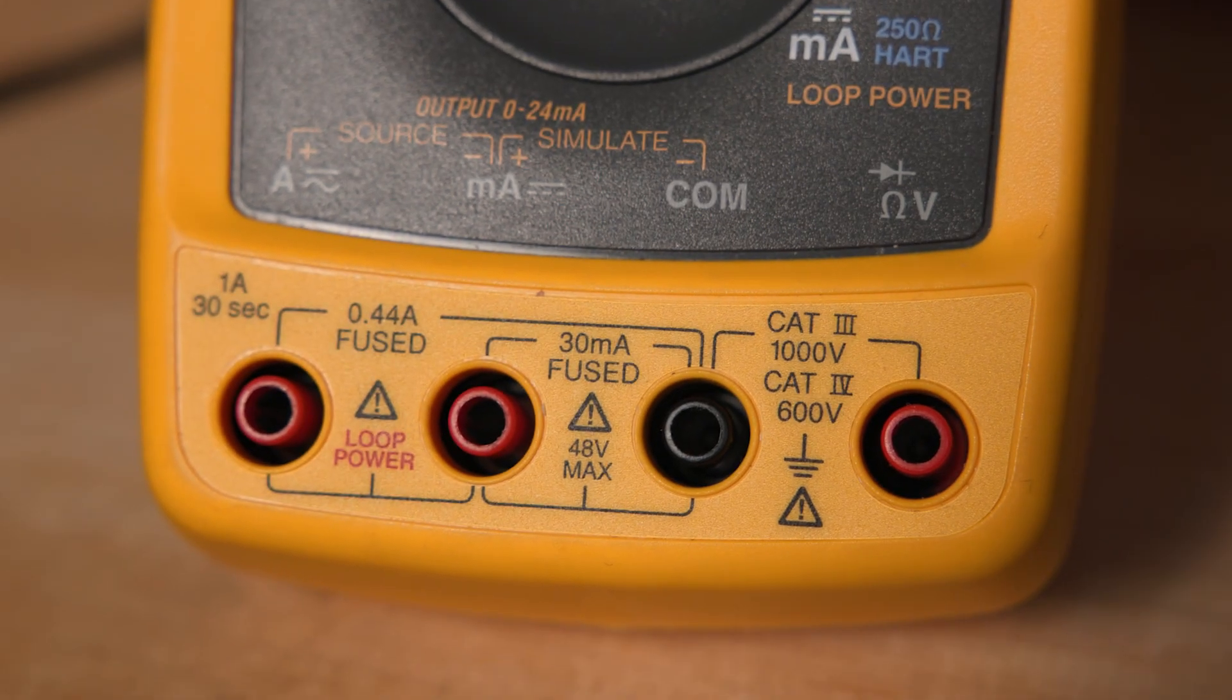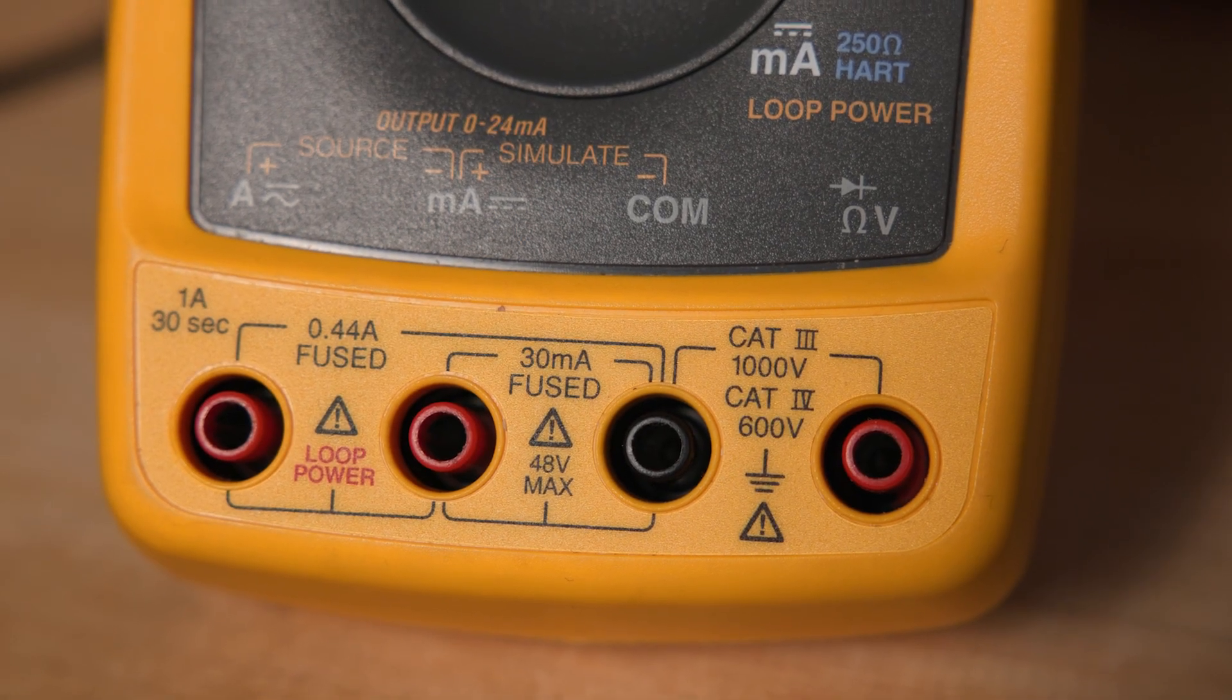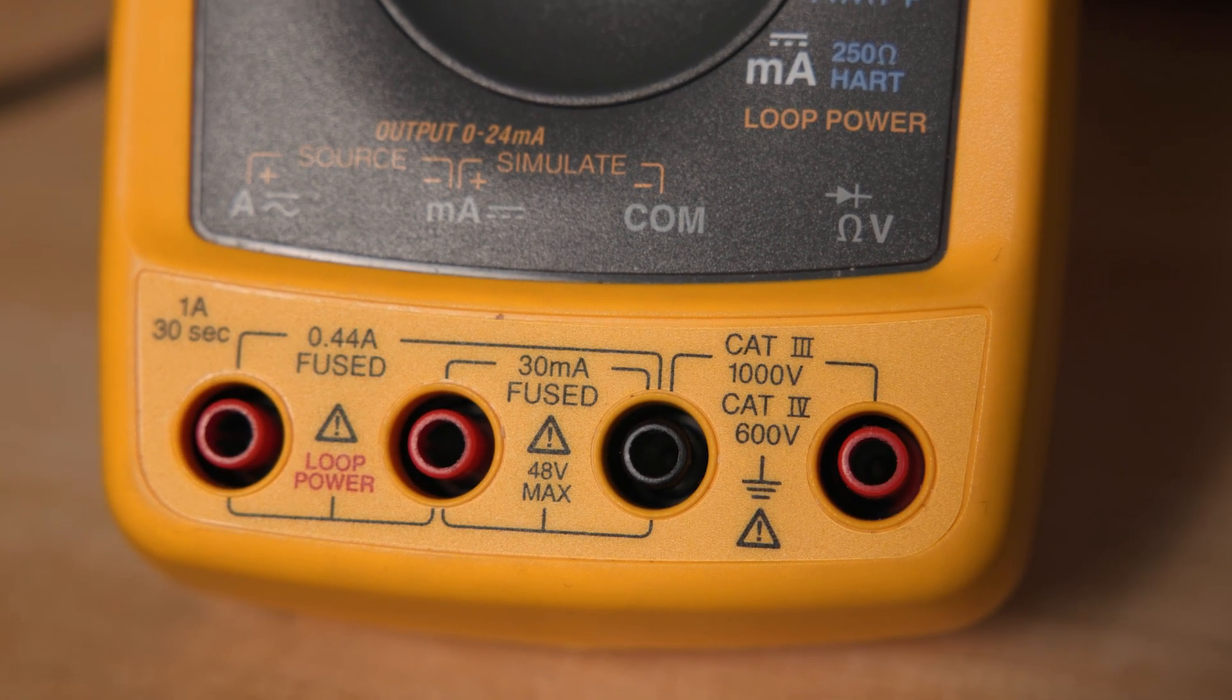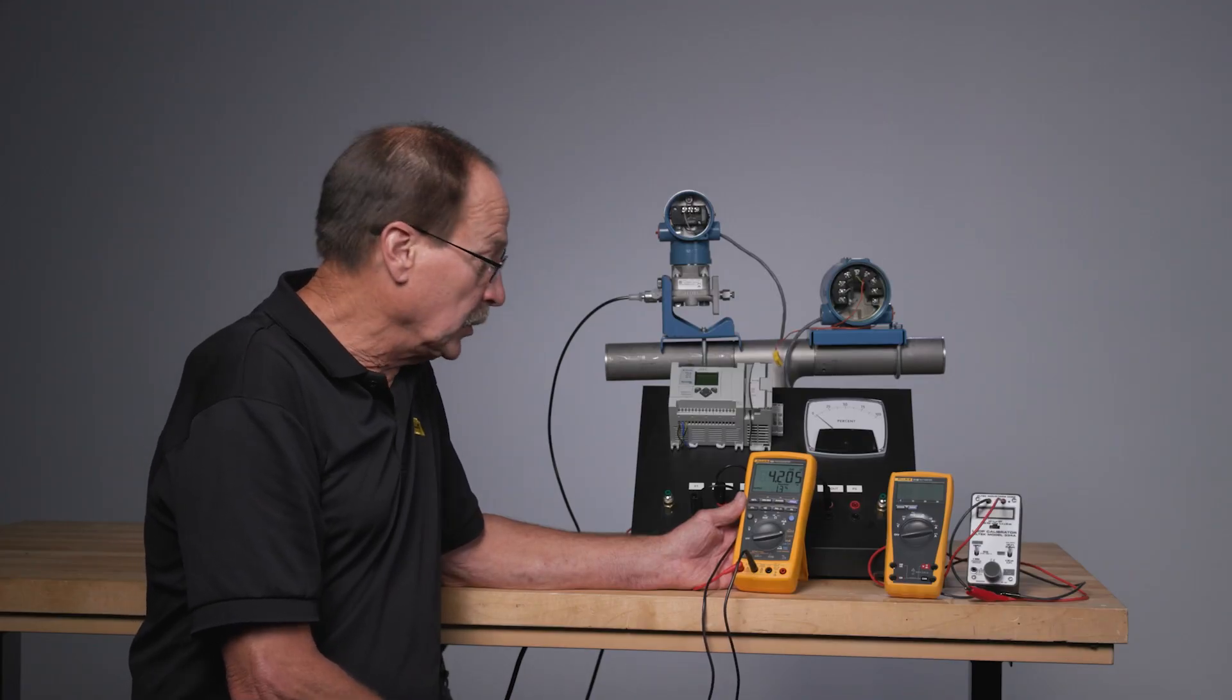The Process Meter has the ability to source milliamp signals, as we just noted here, and to simulate signals to drive signals back into the home run of the control system if you're testing out process control loops.